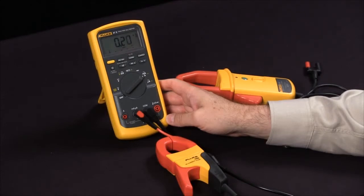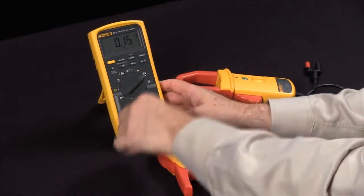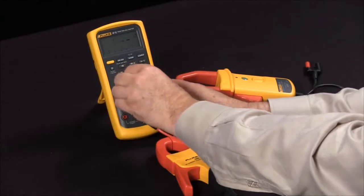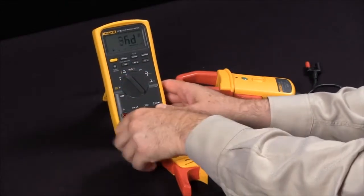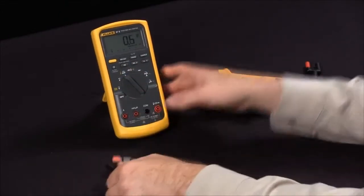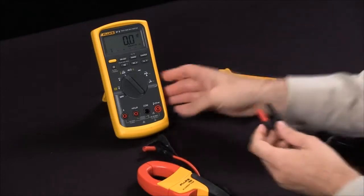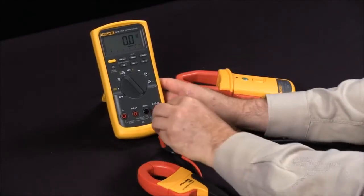When you're measuring AC and DC, it's a little different setup. What you want to do is set your meter to millivolts, unplug the jacks, and in this case you're going to go into your voltage as well as your common inputs.